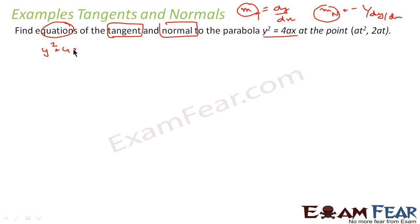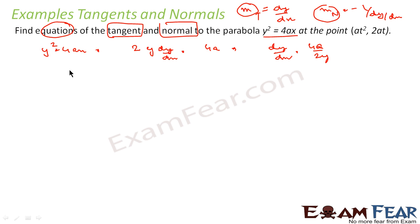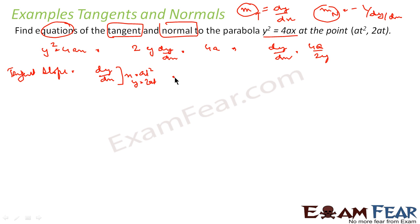I have y² = 4x. If I differentiate both sides, I get 2y · dy/dx = 4a, or dy/dx = 4a / 2y. Now dy/dx is found. The tangent slope is dy/dx evaluated at x = at² and y = 2at, which gives 4a / (2 · 2at) = 1/t. So my slope of tangent is 1/t.